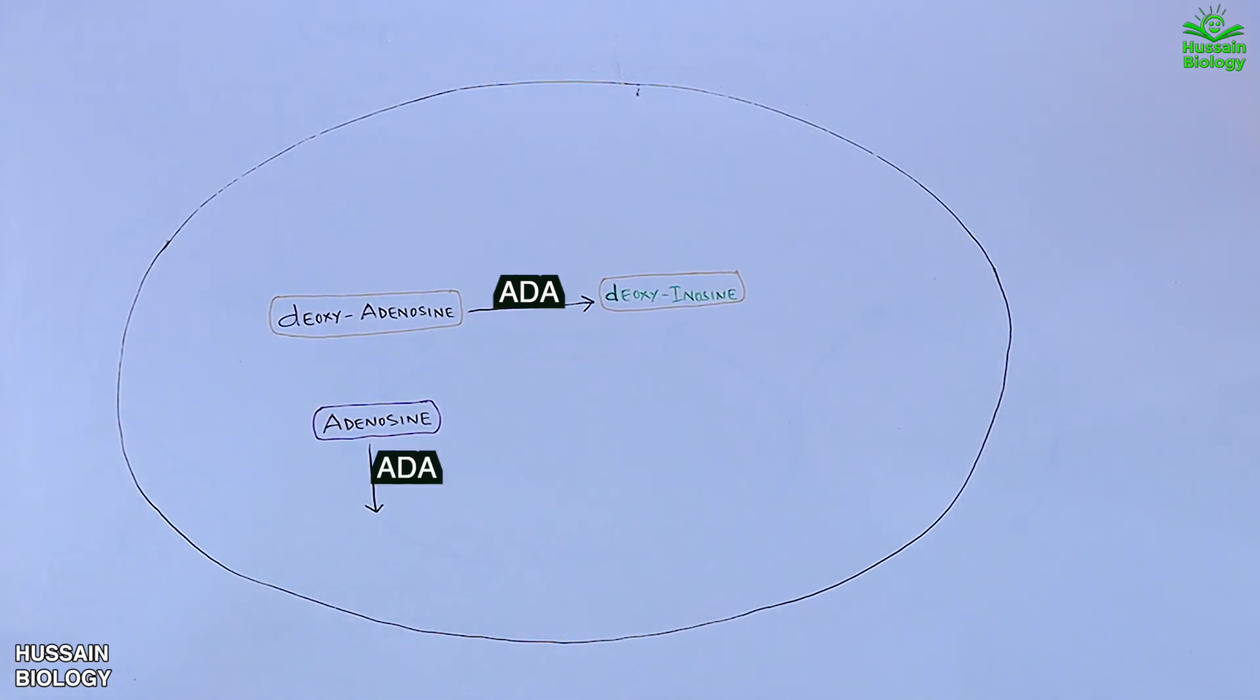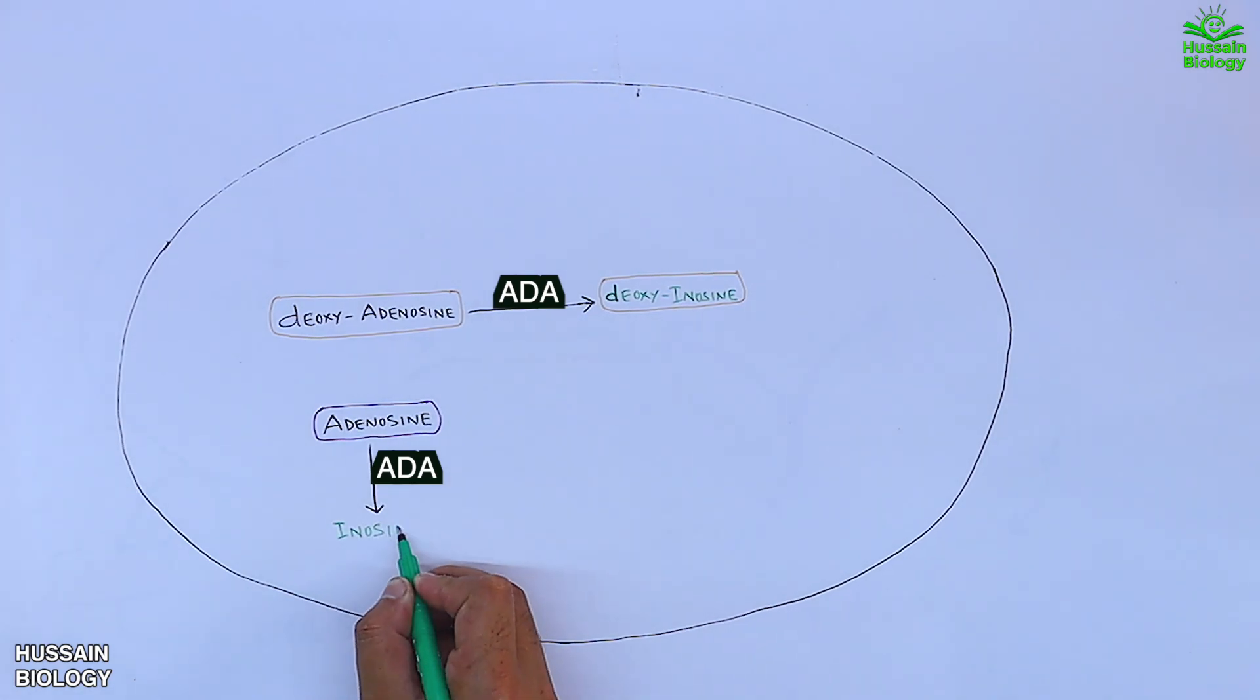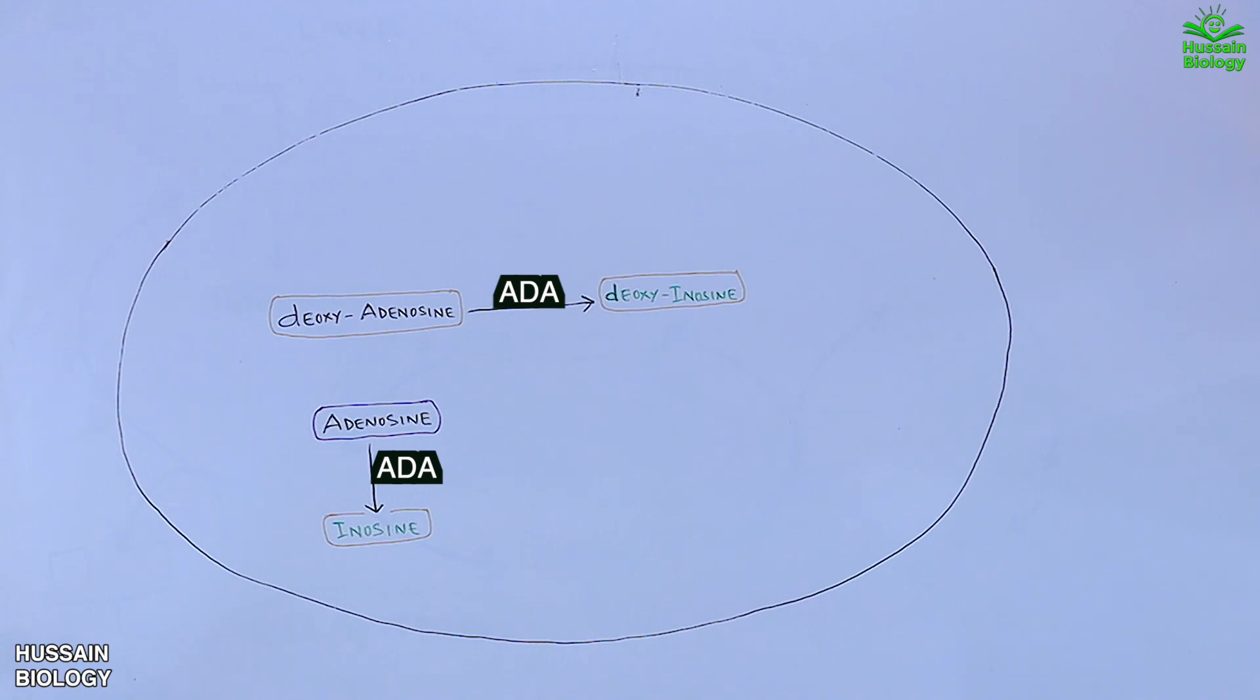But when we have the mutation in the ADA gene, we do not have adenosine deaminase enzyme, and both the reactions of adenosine are halted as shown in the diagram.